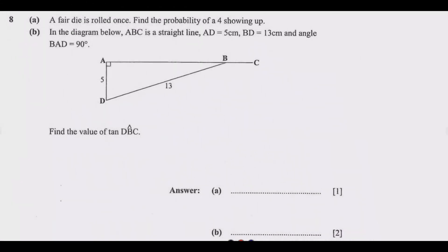We look at question 8. Question 8a: a fair die is rolled once, find the probability of a 4 showing up. So that's question 8a. For us to answer this question let me use this space, this will be 8a.